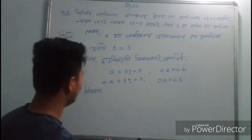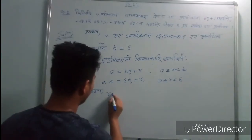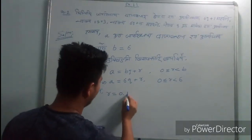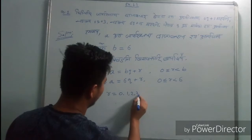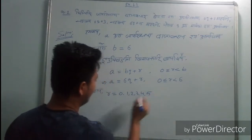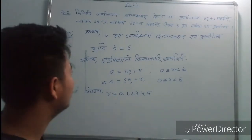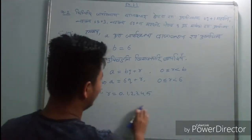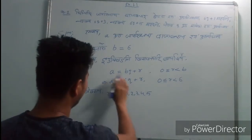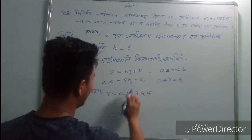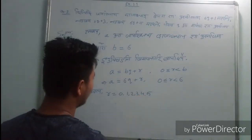You can see the r can take values 1, 2, 3, 4, or 5. So r is 0, 1, 2, 3, 4, 5.